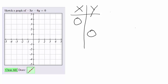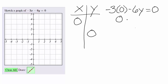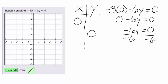First off, let's put 0 in for x. So we would have negative 3 times 0 minus 6y equals 0. Zero times anything is 0, so negative 6y equals 0. Dividing both sides by negative 6, negative 6 divided by negative 6 cancels, and y equals 0 divided by anything is 0. So there's our first point.